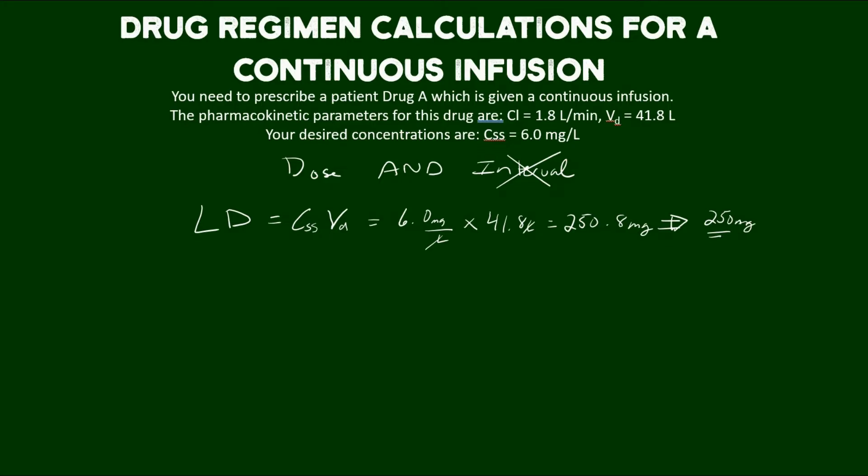Now, let's figure out our maintenance dose or our infusion rate. And that's simply calculated as the concentration at steady state desired times clearance. So figuring out how much drug is going to be cleared and counteracting that with our infusion rate to achieve a concentration desired at steady state.